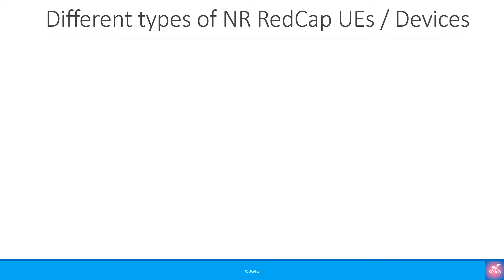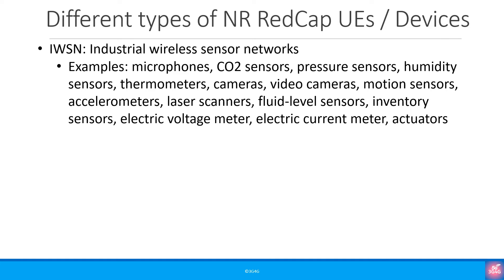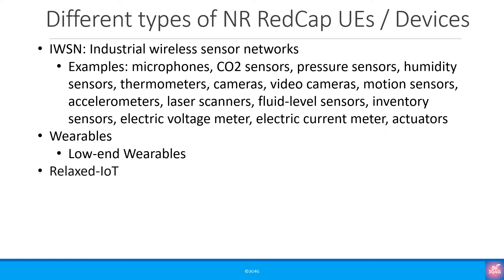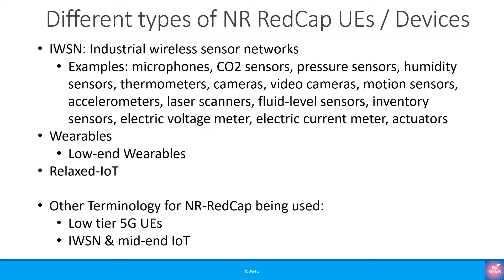The different types of NR REDCap devices include: IWSN — Industrial Wireless Sensor Networks — with examples such as microphones, CO2 sensors, pressure sensors, humidity sensors, thermometers, cameras, and video cameras; wearables and low-end wearables; and relaxed IoT. Different terminology being used for REDCap includes low-tier 5G UEs, IWSN, and mid-end IoT.